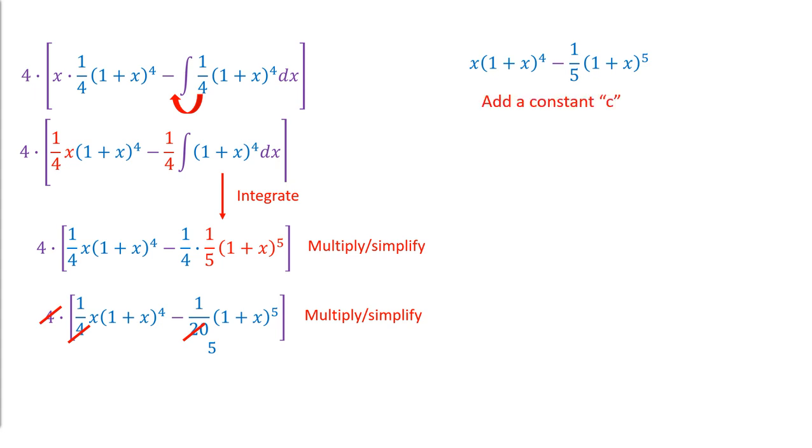All we have to do is add a constant c and we are done. So we get x times 1 plus x to the fourth minus 1/5 times the quantity 1 plus x to the fifth plus c, because there are an infinite number of expressions that will satisfy this integral because you could add any constant to it and you would still be correct.